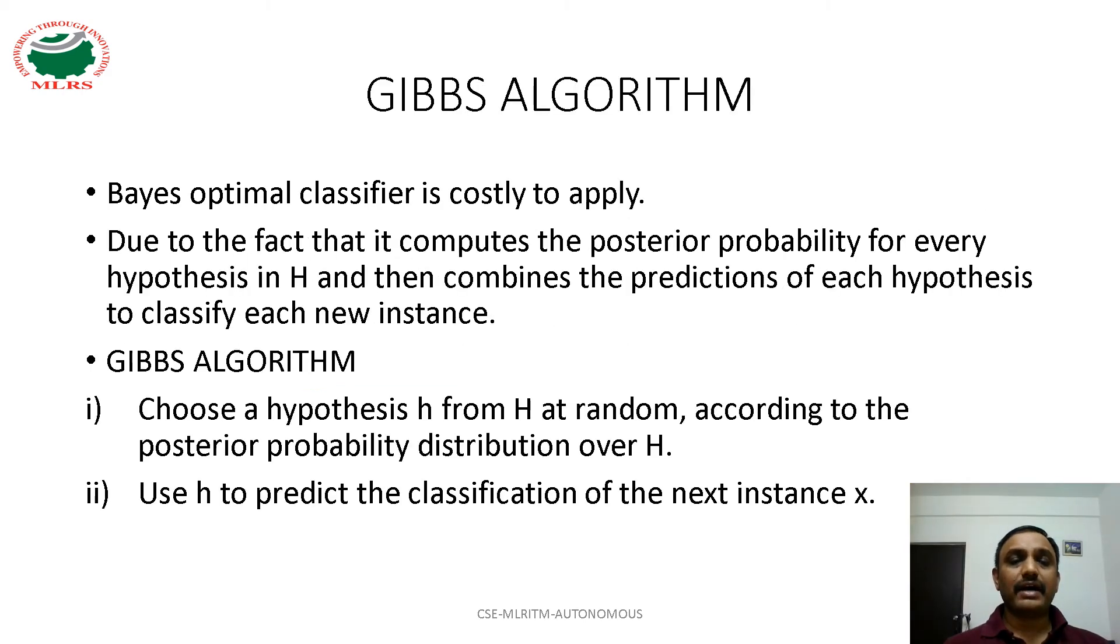The Bayes optimal classification is costly to apply due to the fact we have to consider posterior probability for every hypothesis in hypothesis space, then combine predictions of each hypothesis to classify each new instance.